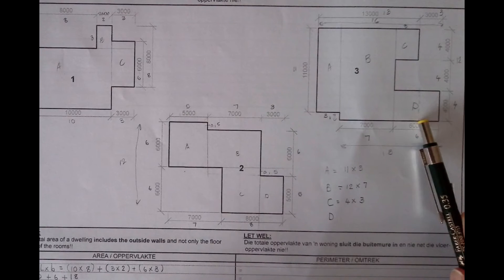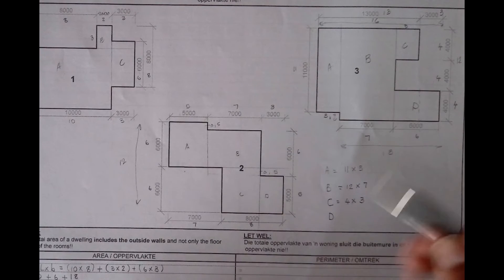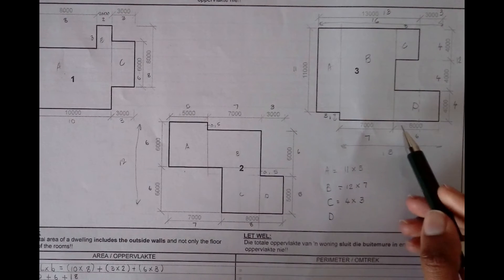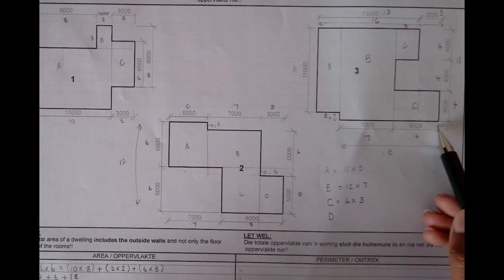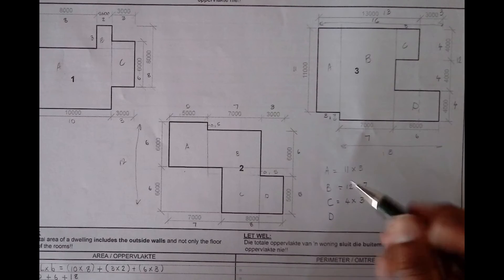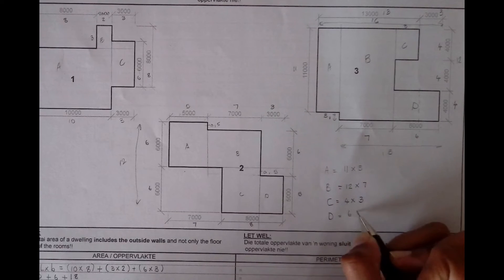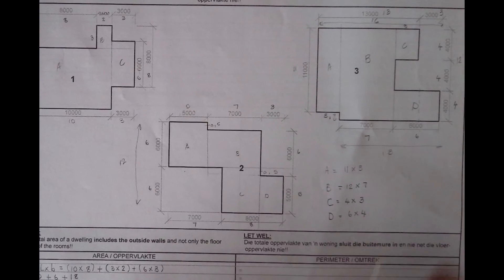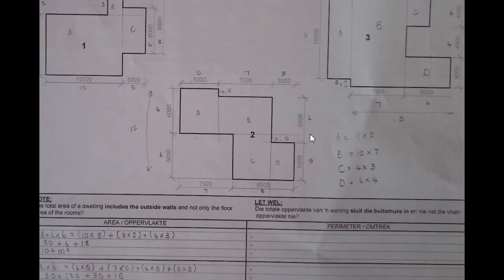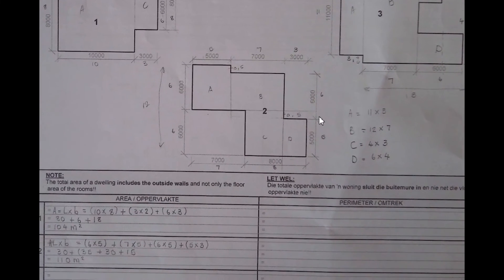For the last rectangle, D, we have the length of 6 by 4 — that one is already given: 6 by 4.